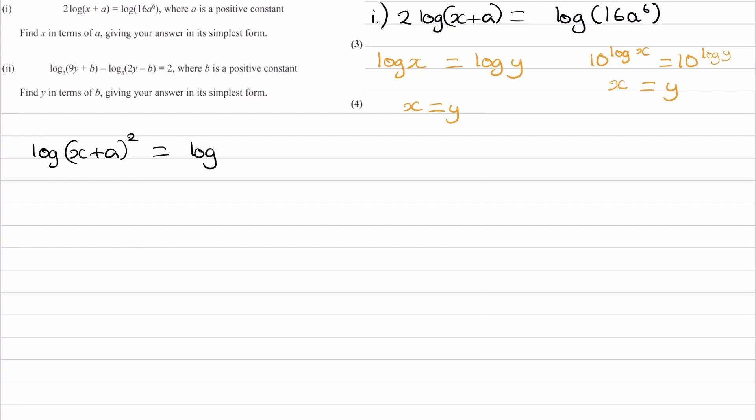And the right-hand side, keep it as it is for now. And now that we have log of something is equal to log of something, now we can cancel out those two logs and we end up with (x+a) squared is equal to 16a to the power of 6.